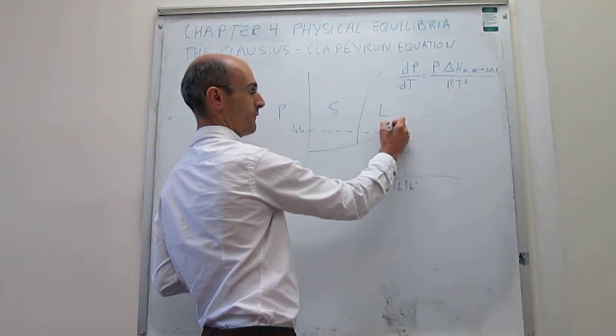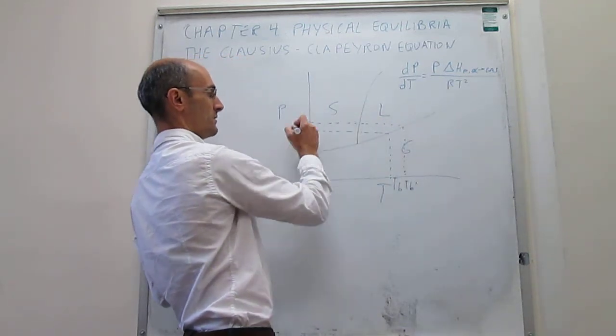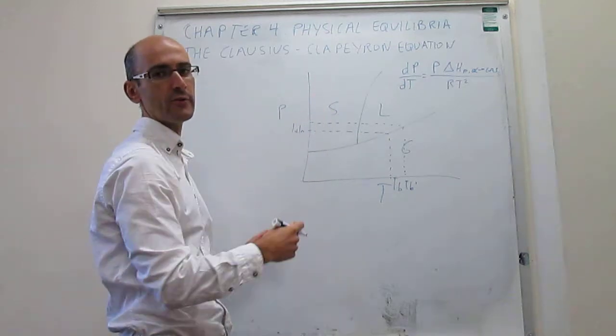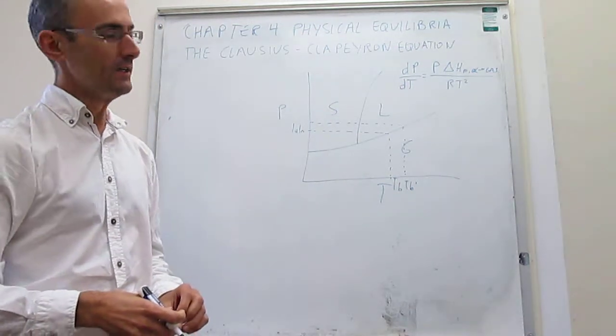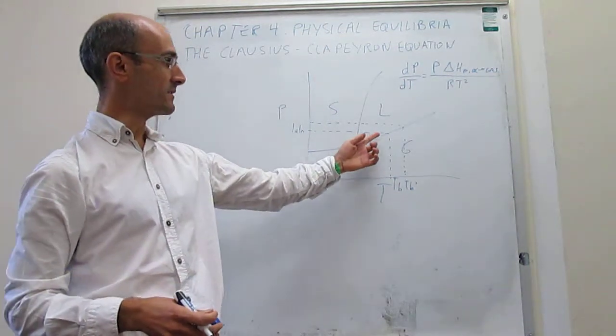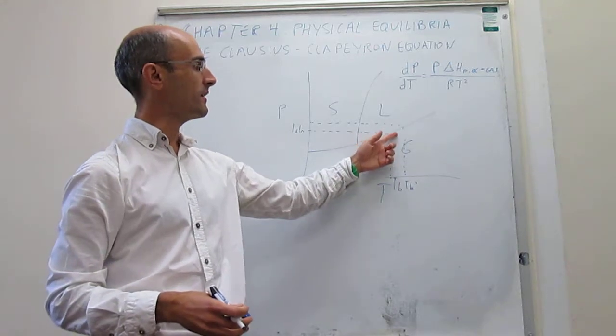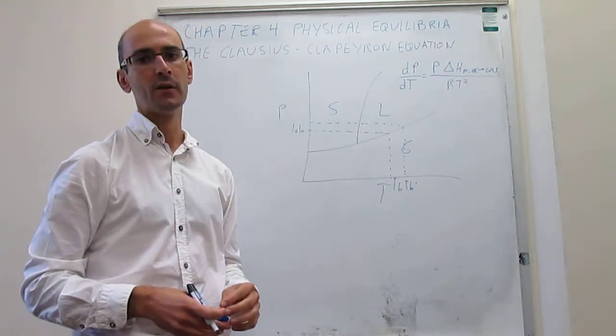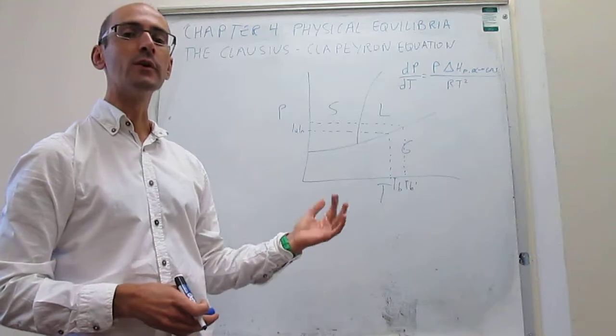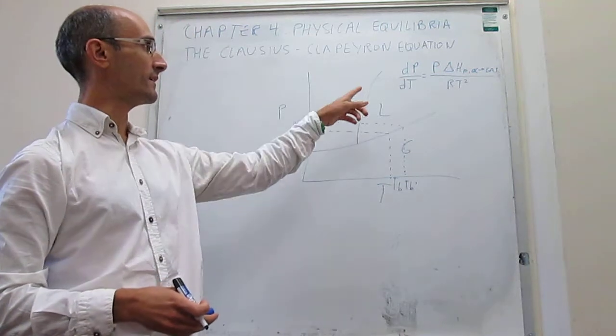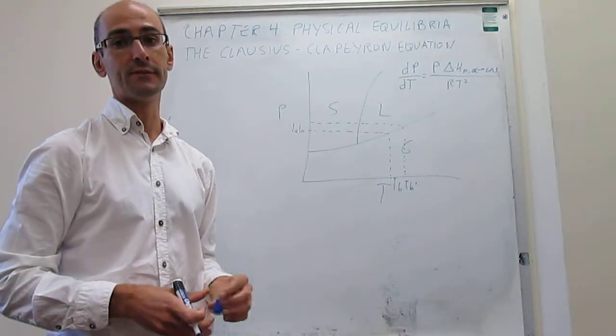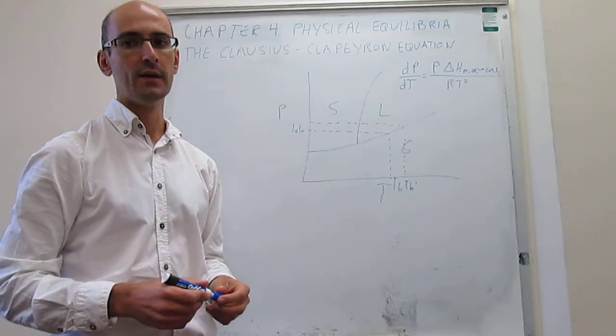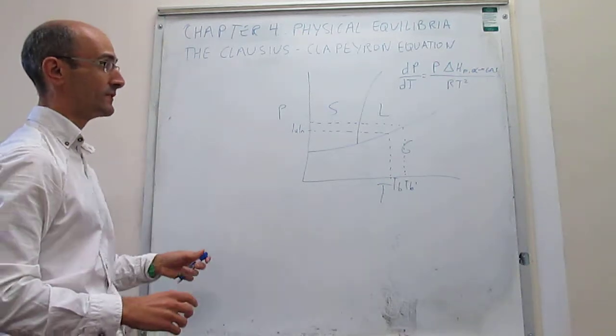This T prime, for the pressure of your choice or whatever target pressure you want. This requires knowledge of how the slope is varying as you go from that point to that point. To actually do that numerically, we have to carry out an integration of that differential Clausius-Clapeyron equation, and you'll see that's not very difficult to do.